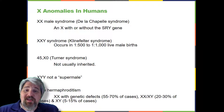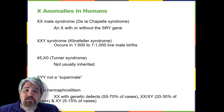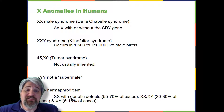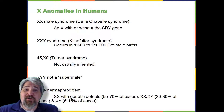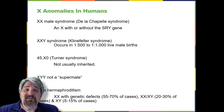An individual with more than the correct number of chromosome sets — two for diploid species — is called polyploid. For instance, fertilization of an abnormal diploid egg with a normal haploid sperm will yield a triploid zygote. Polyploid animals are extremely rare, with only a few examples among flatworms, crustaceans, amphibians, fish, and lizards. Triploid animals are sterile because meiosis cannot proceed normally with an odd number of chromosome sets. In contrast, polyploidy is very common in the plant kingdom, and polyploid plants tend to be larger and more robust than euploids of their species.